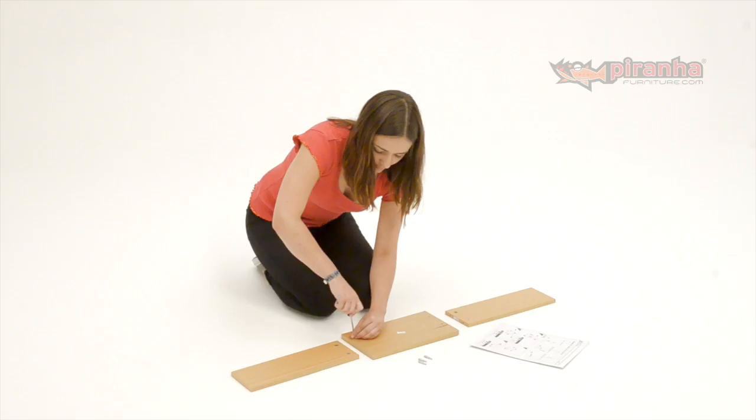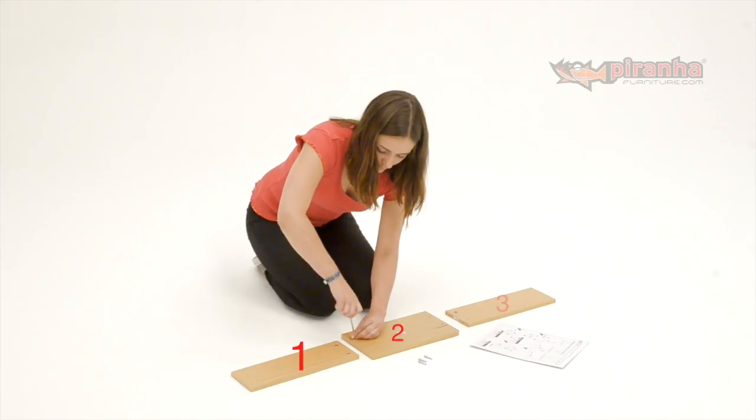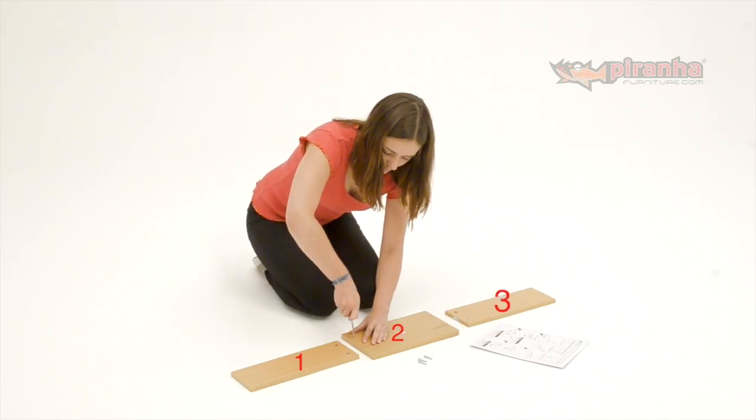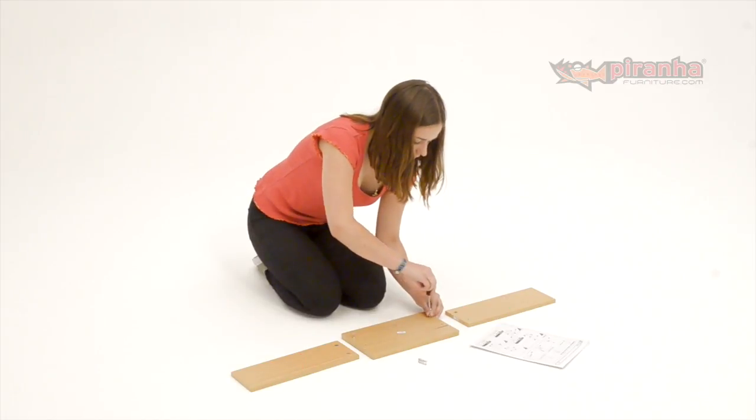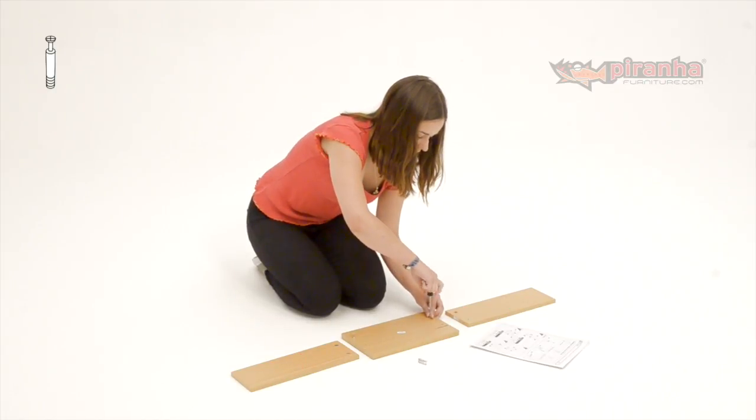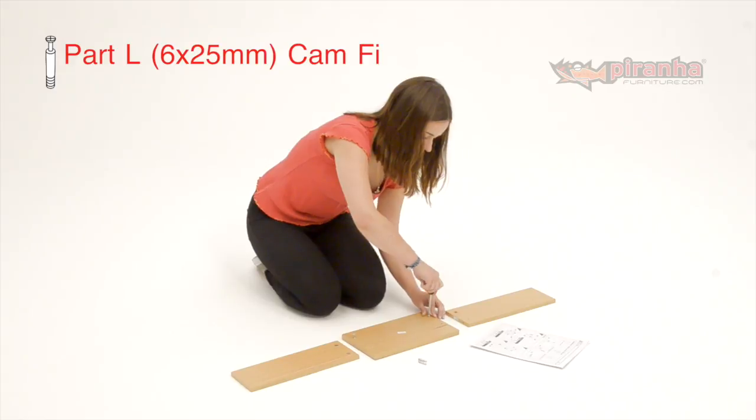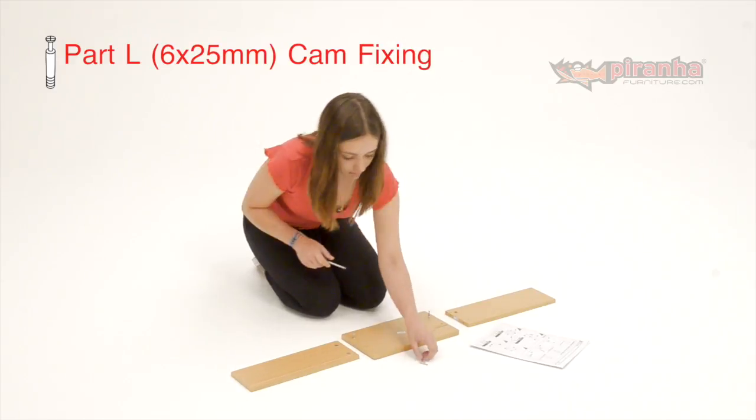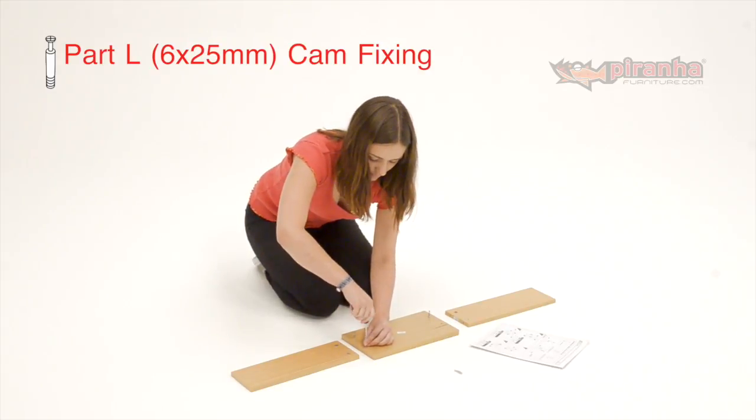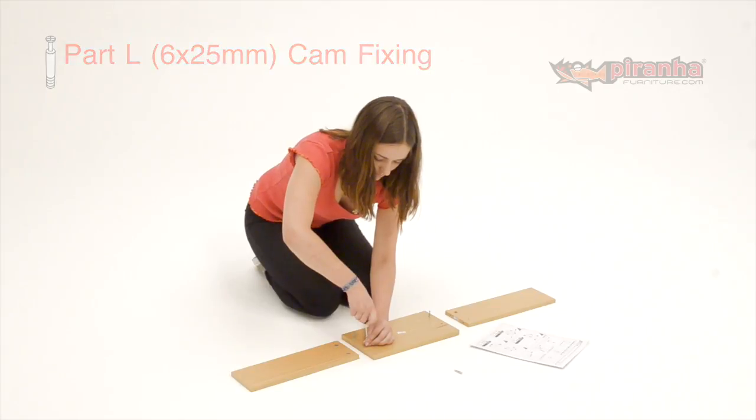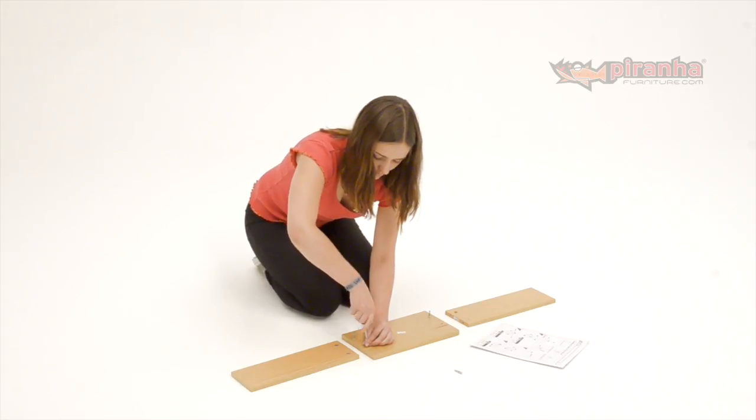Step 1. Find the parts that make up the drawer front and sides. Screw four 6x25mm bolts into the pre-drilled holes on the drawer front. These connecting bolts are called CAM fixings and are widely used throughout the construction of all our flat-packed furniture. Please be aware that there are two different sizes of these fixings. Here, we need to use the smaller 6x25mm bolts.